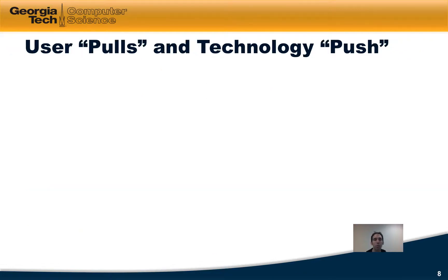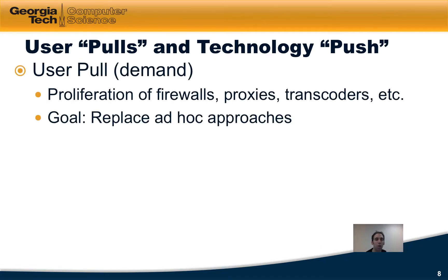There are both user demands and technology enablers that made active networks compelling at the time. On the demand side, the proliferation of firewalls, proxies, transcoders, etc., resulted in a lot of ad hoc point solutions to various custom packet processing problems. The goal or vision of active networks was to replace a lot of these ad hoc approaches with a more unified approach.